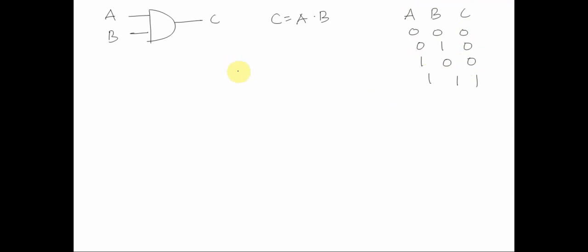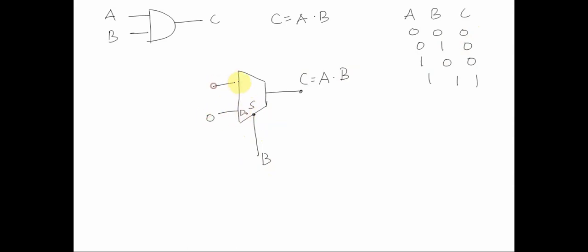Now if we have to implement an AND gate using a MUX, we want output C equal to A AND B. If we connect B to the select line: when B is 0, output must be 0 irrespective of A, so we connect 0 to D0. When B is 1, whatever value A has is transferred to C, so we connect A to D1. This gives us an AND gate.